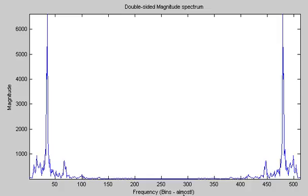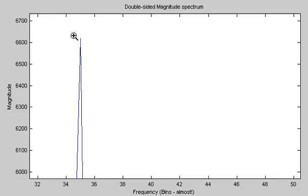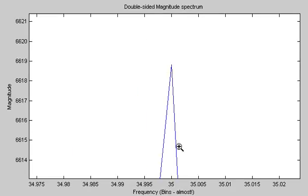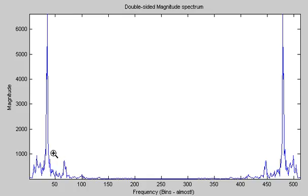And the reason why I say it's almost the frequency in bins is because the frequency axis here is actually being out by a value of 1. And by that I mean, say, if this peak here which is shown as being a bin value of 35, well that is actually bin number 34.